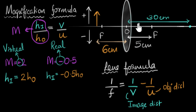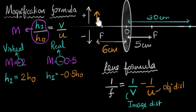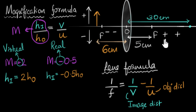Now, these distance values are also sign-sensitive. For distances, we start from the optic center and move in the incident direction, calling that positive. Here, the incident rays travel towards the right, so the incident direction is to the right. All positions to the right side are positive, and all positions to the left side are negative. With that, we have everything ready to substitute and figure out the magnification, the height of the image, and whether it's real or virtual.